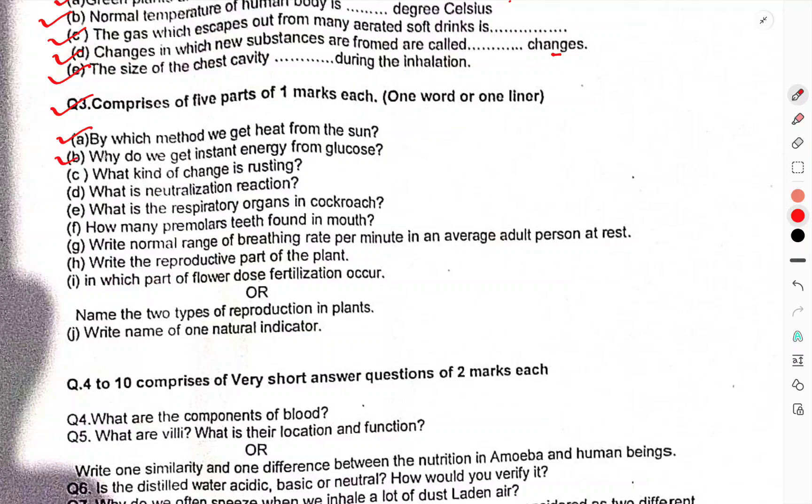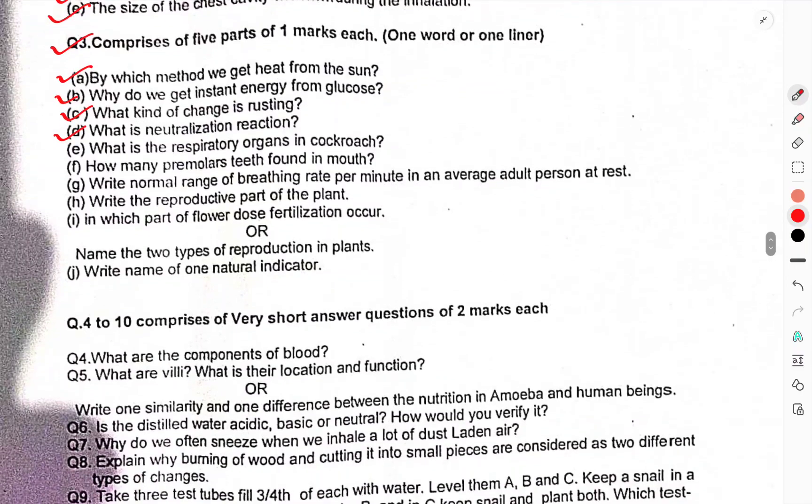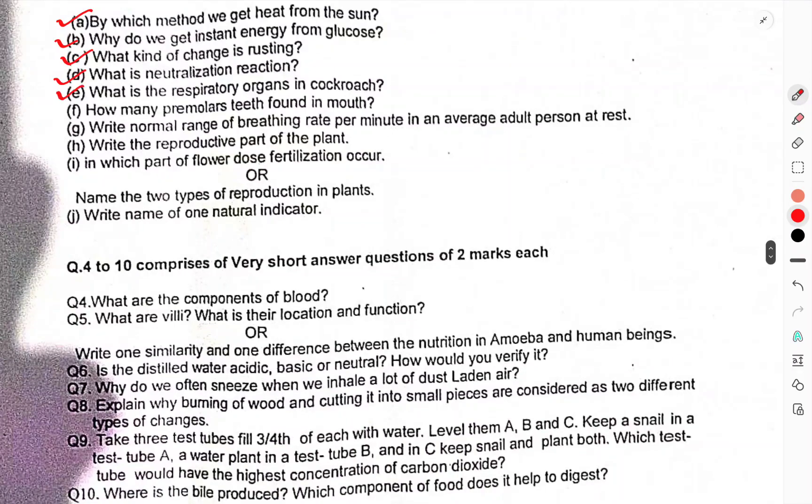Question 3 comprises five parts, one mark each. By which method do we get heat from the Sun? What do we get instantly from glucose? What kind of change is rusting?